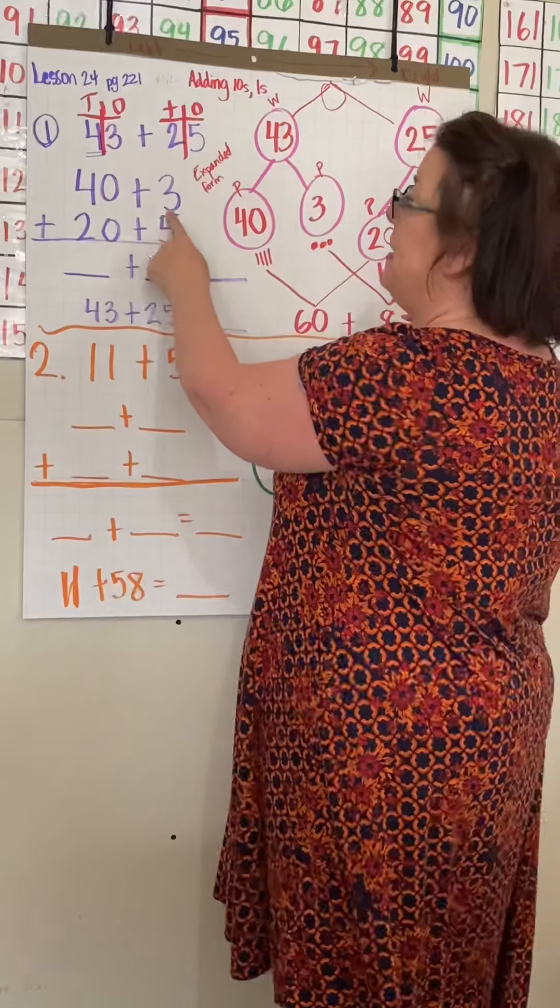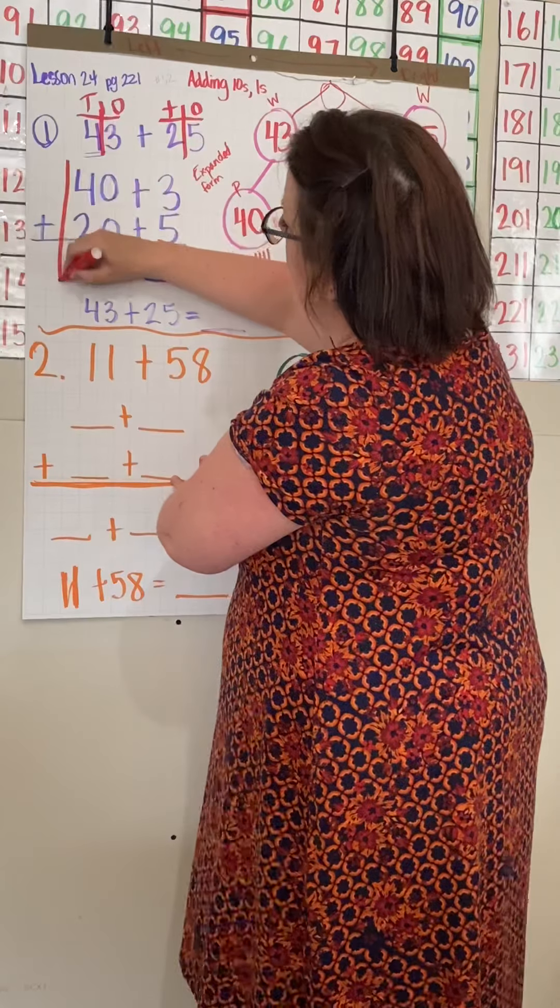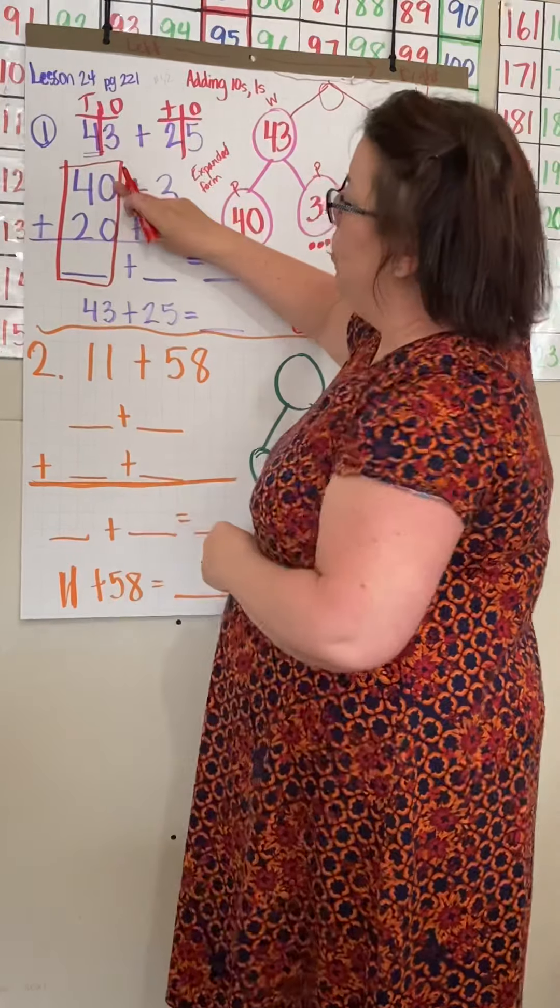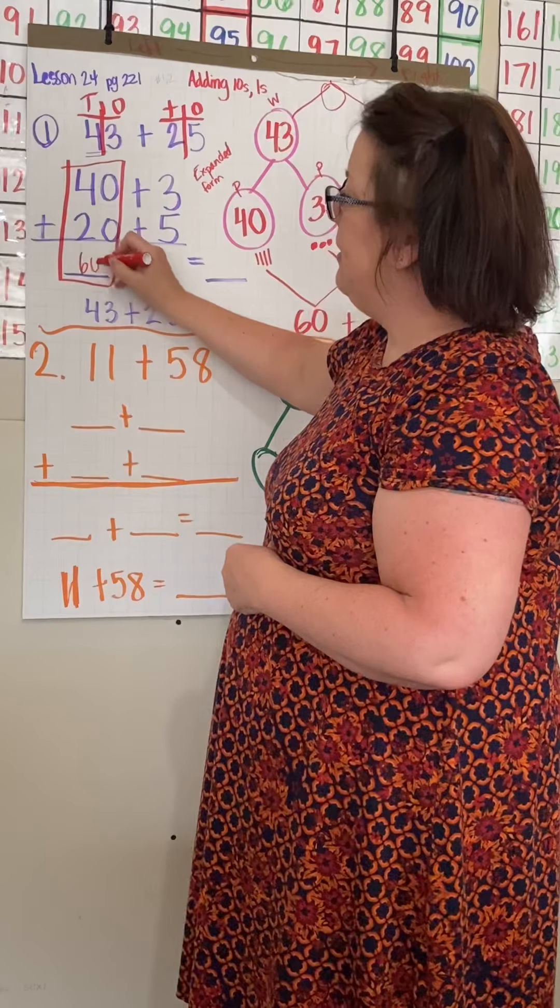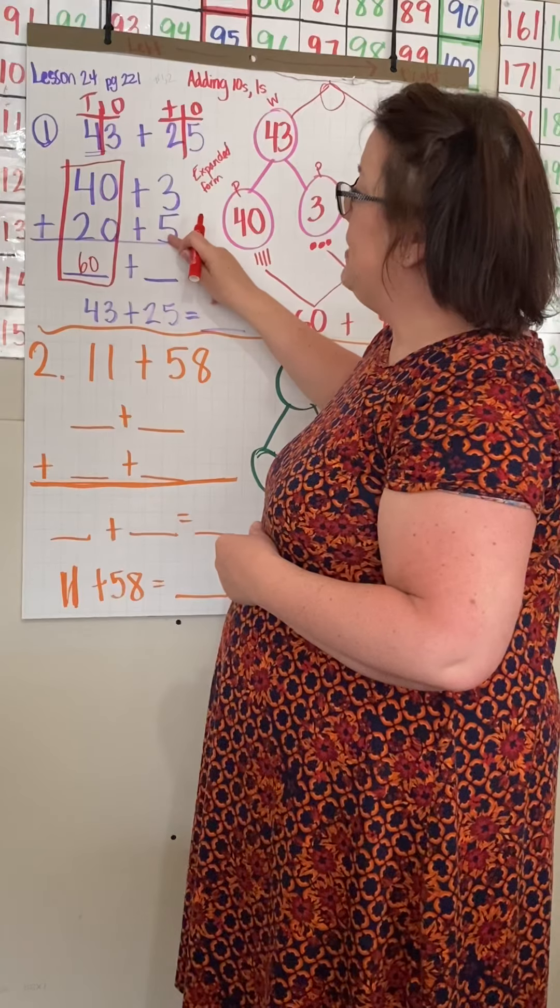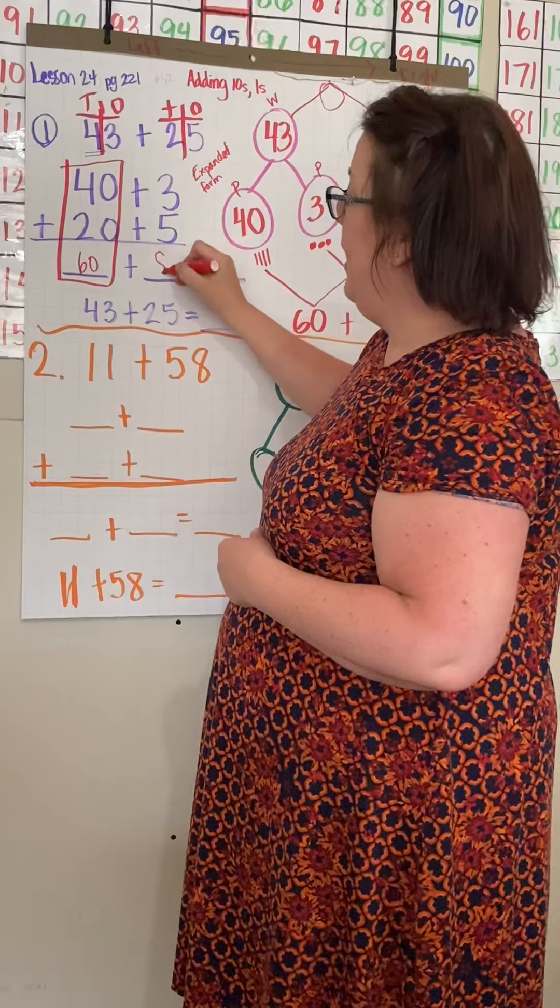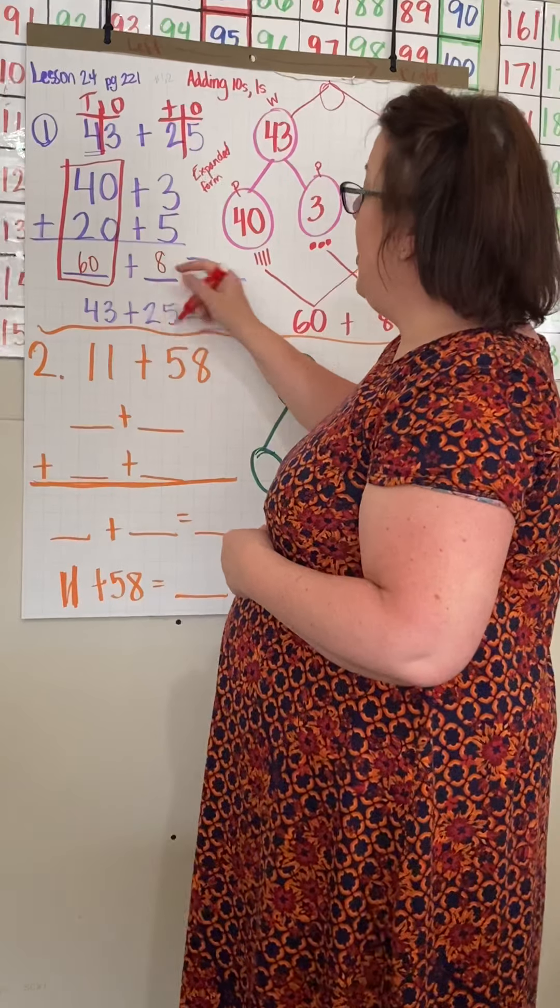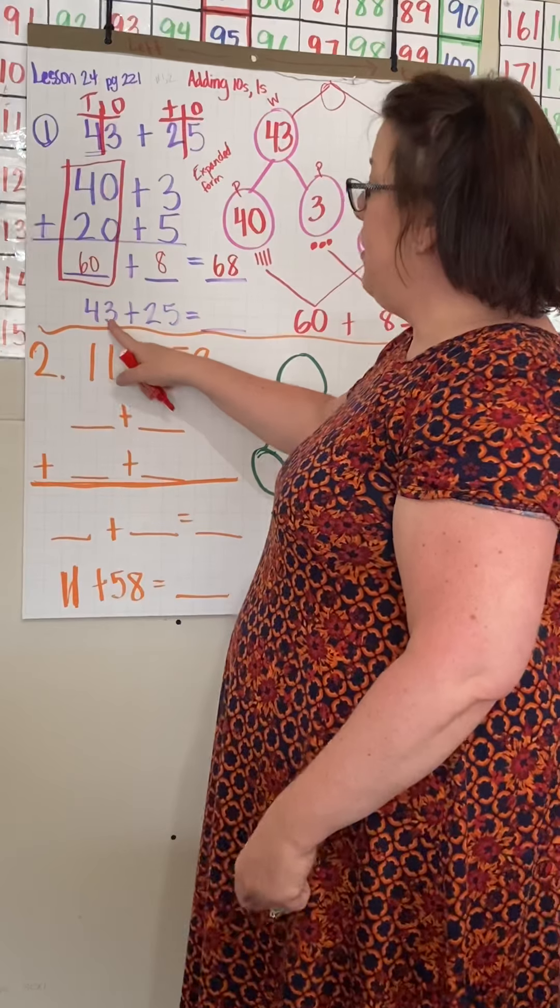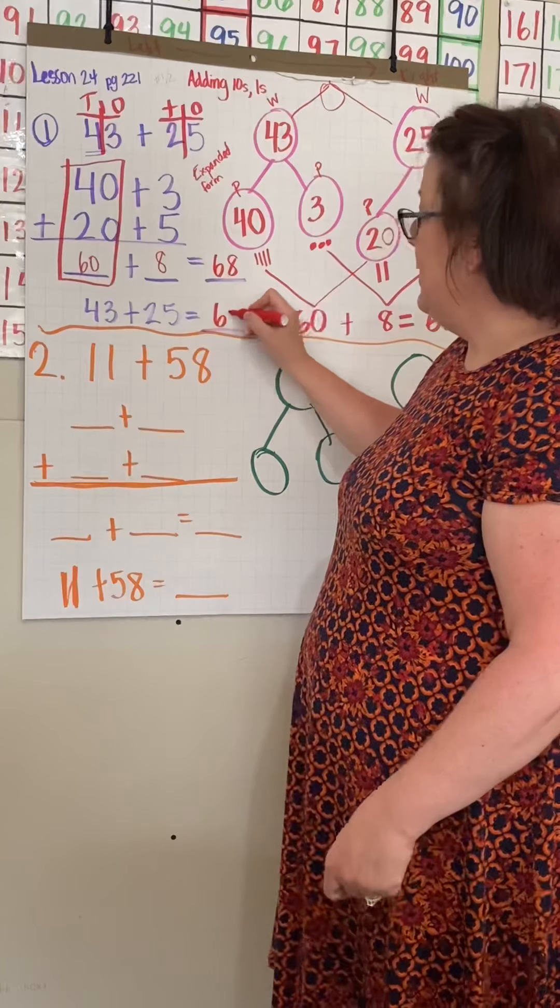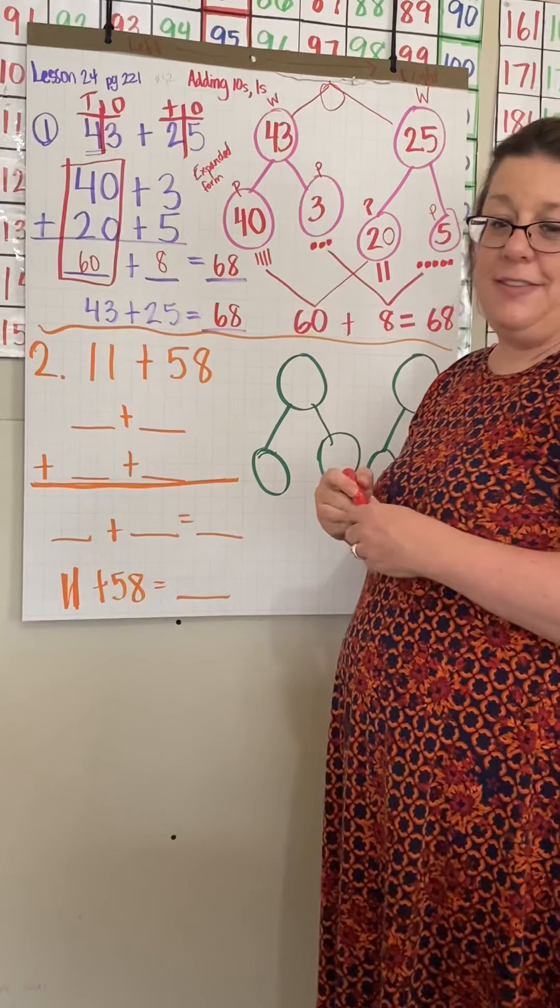Now let's look at here. We had 40 plus three. Let's look at our tens. 40 plus 20 is 60. 3 plus 5 is 8. 60 plus 8 is 68. So 43 plus 25 is 68. All right.